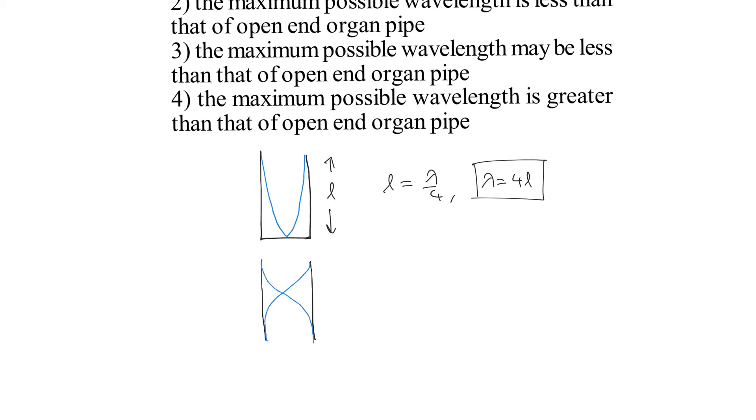Then the value of this L is going to be lambda divided by 2. So the value of lambda is equal to 2L, not equal to that of a closed end air column.